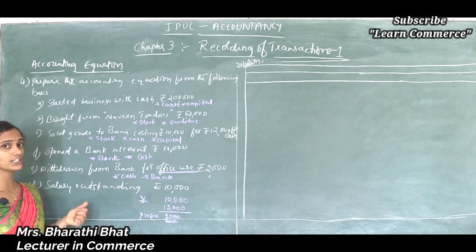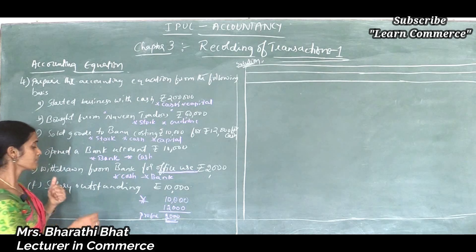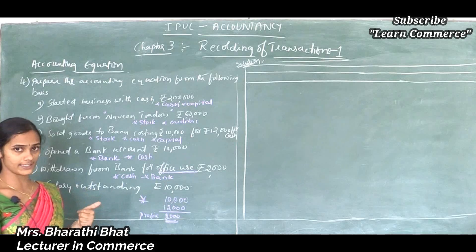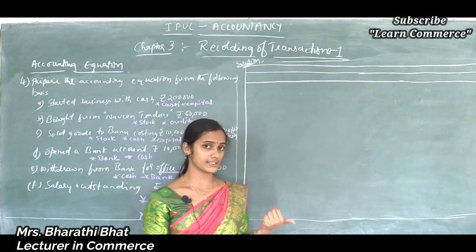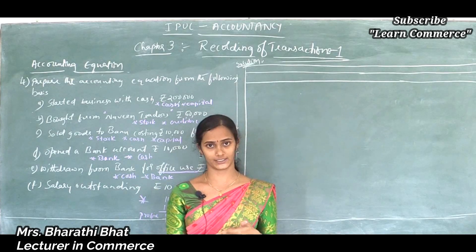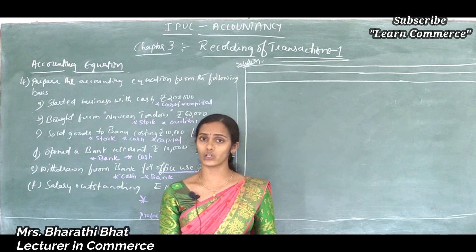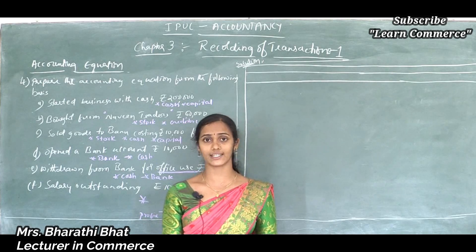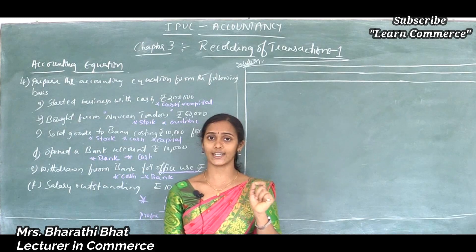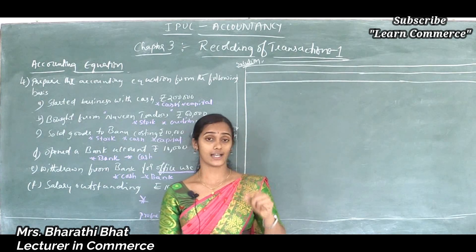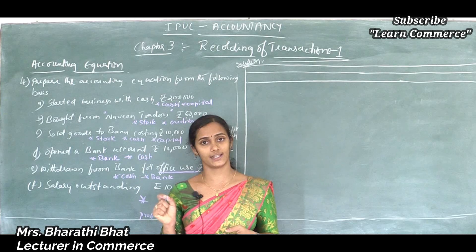Salary outstanding — this is a new transaction. Outstanding means salary is due but not yet paid. Last month's salary was still not paid by the business organization. That salary which has not been paid is considered as outstanding salary — salary unpaid.